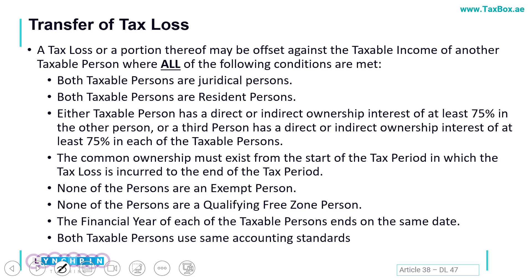We also have the option to transfer tax losses within the same qualifying group. In our qualifying group section, we have seen that if there is a common shareholding of at least 75% between entities, we call them a qualifying group. In those cases, if we are part of the same group, we can offset losses of company A against the income of company B. All of the following conditions must be fulfilled: all should be juridical persons — meaning incorporated entities — and we cannot adjust losses against the income of individuals. Both taxable persons should be resident, and there must be 75% common ownership.